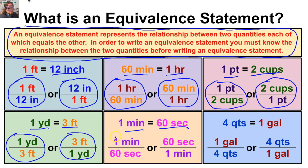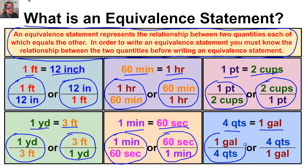One minute equals 60 seconds, which we can write as one minute over 60 seconds or 60 seconds over one minute. And last but not least, four quarts equals one gallon. We can express this as one gallon over four quarts or four quarts over one gallon. Now let's take a look at some SI system or metric system equivalence statements.